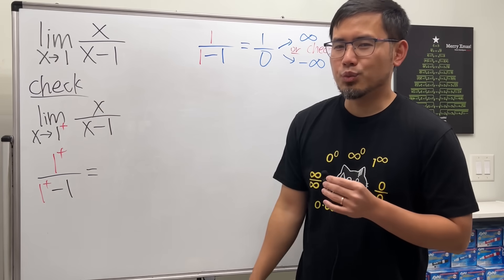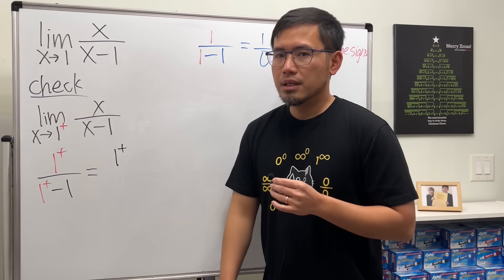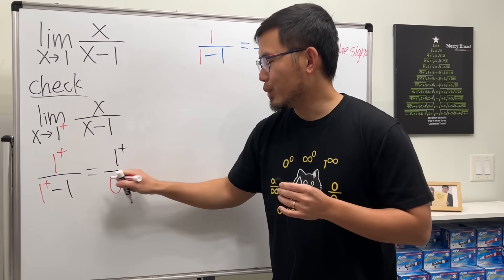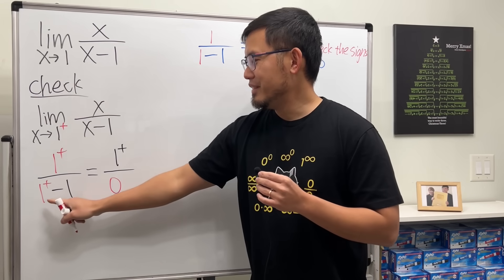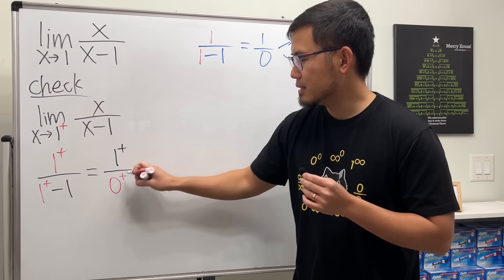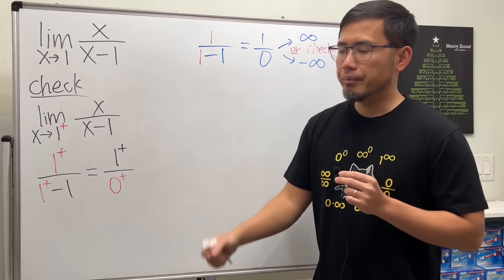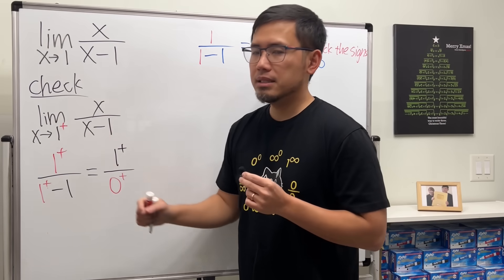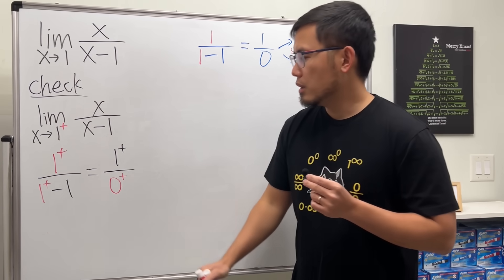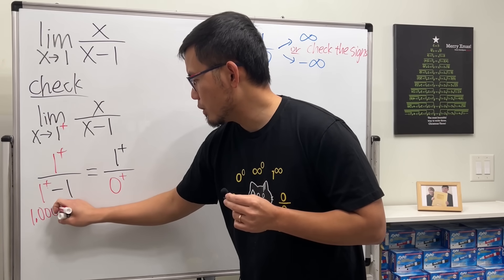You're going to be wondering what's 1 plus, right? On the top, I will still keep it as 1 plus. Now, on the bottom, check this out. 1 minus 1, we know that's equal to 0. But if you have 1 plus here and then minus 1, this right here is 0 plus. It's a little bit confusing. So let's do this. Let's think about 1 plus as a number that's just a little bit bigger than 1. So we can look at 1 plus as 1.0001.